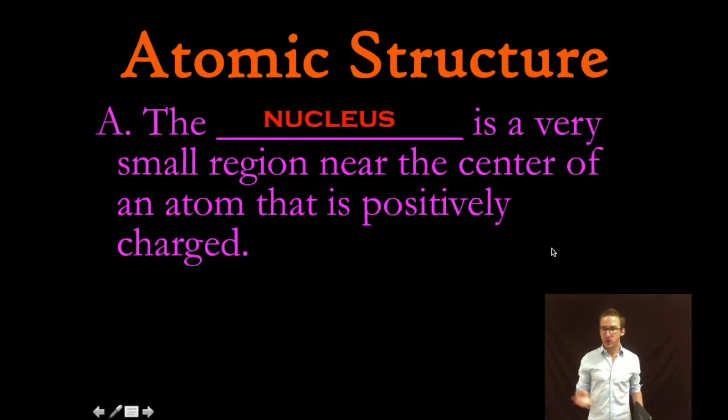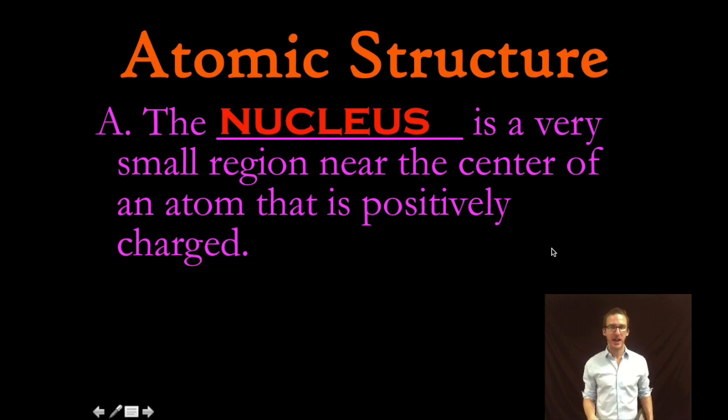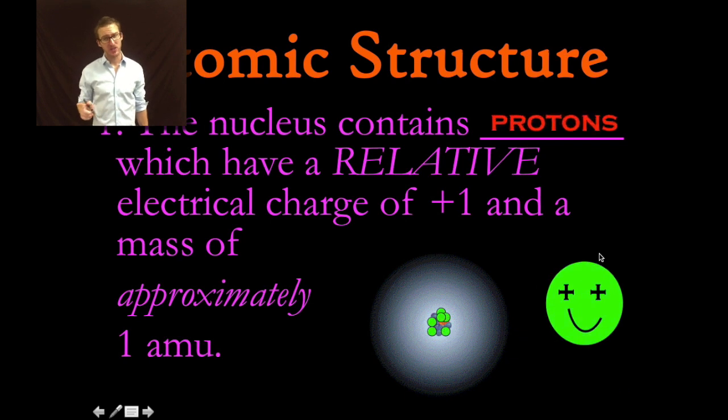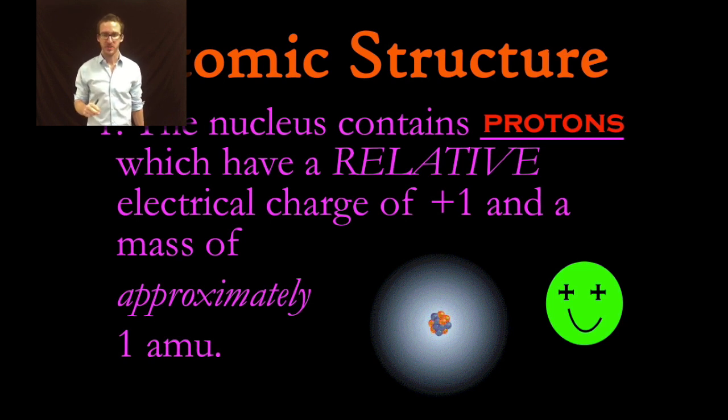Now we're gonna start with the nucleus. It's a very small region near the center of an atom that is positively charged. The nucleus contains our first atoms family member, good old Patty Proton there. Our protons have a relative electrical charge of plus one and a mass of approximately one atomic mass unit or AMU.